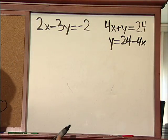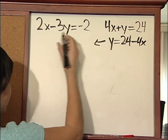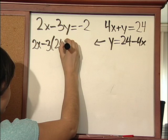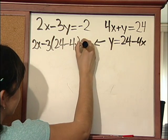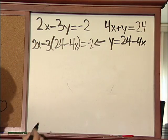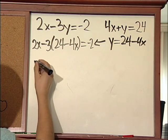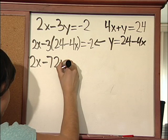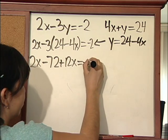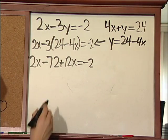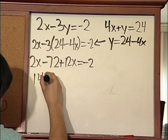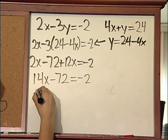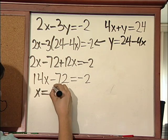Then we're going to substitute that equation in for y in the first equation. We're going to distribute the negative 3 into 24 and into negative 4x, to get 2x minus 72 plus 12x is equal to negative 2. Now we would simplify to get 14x minus 72 equals negative 2, and we would solve for x to get 5.